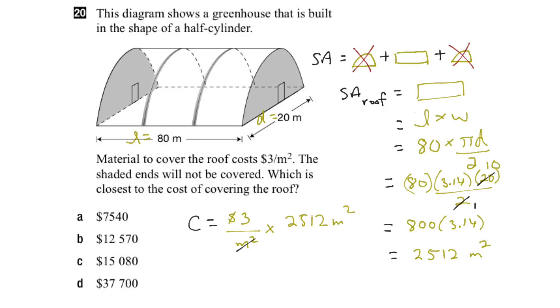And as you can see here, the meters squared cancel out, and what I'm left with is simply the dollars. So the cost is equal to 3 times 2,512, which works out to be about $7,536.